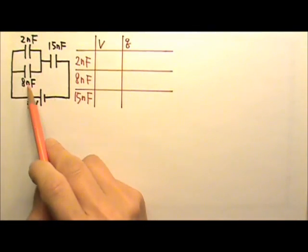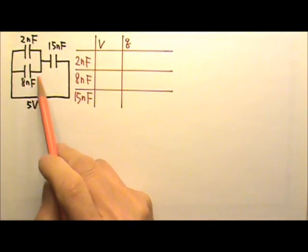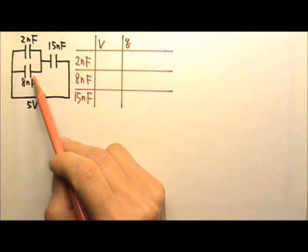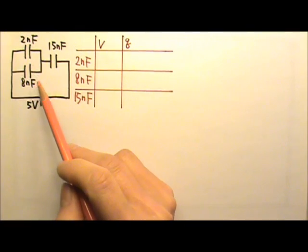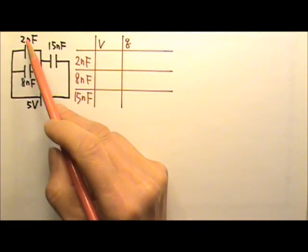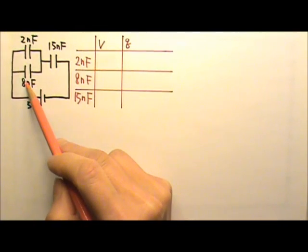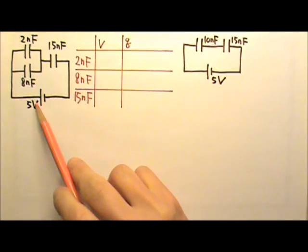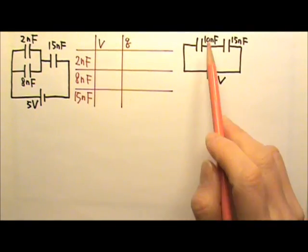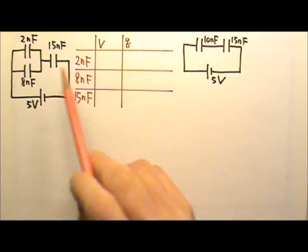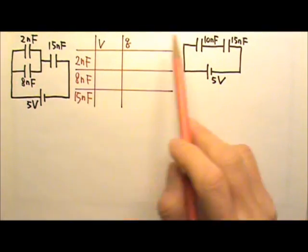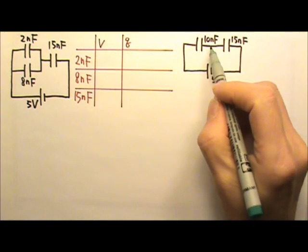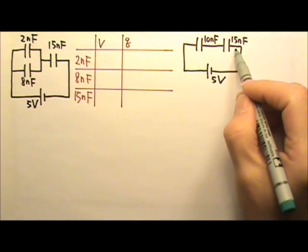We can start with these two in parallel. When capacitors are in parallel, we add the capacitance to find their equivalent. So the equivalent is 2 plus 8, which is 10 nanofarad. We can use the equivalent 10 nanofarad to replace this part. The 10 and 15 nanofarad are in series.